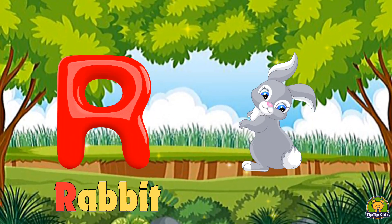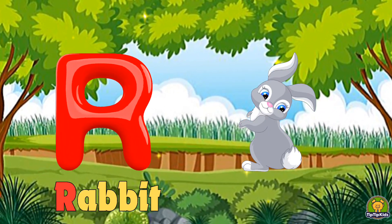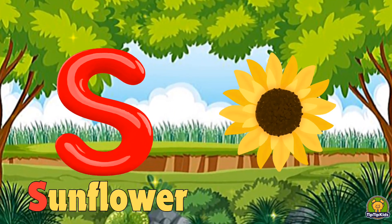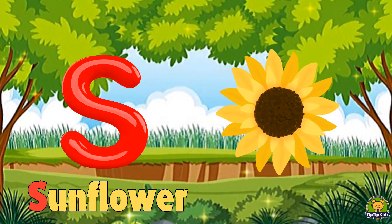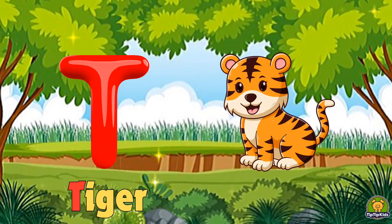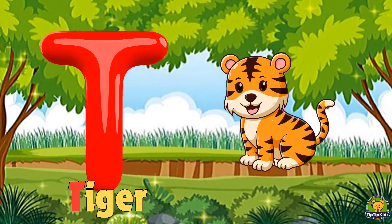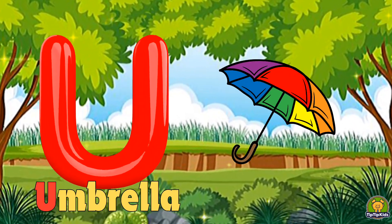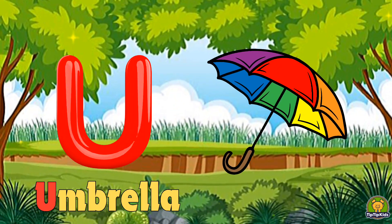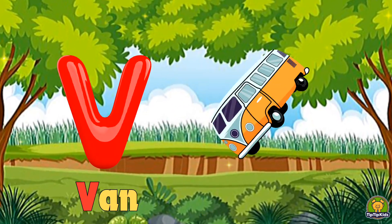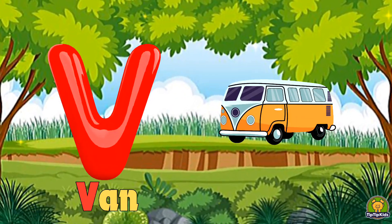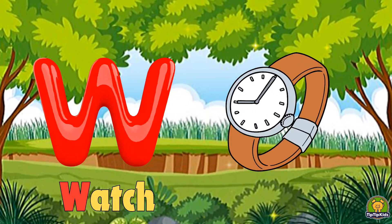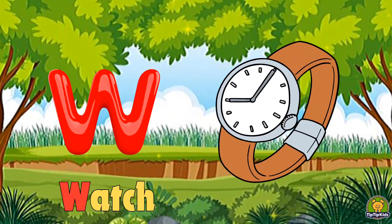R for rabbit, S for sunflower, T for tiger, U for umbrella, V for wedge, W for watch.